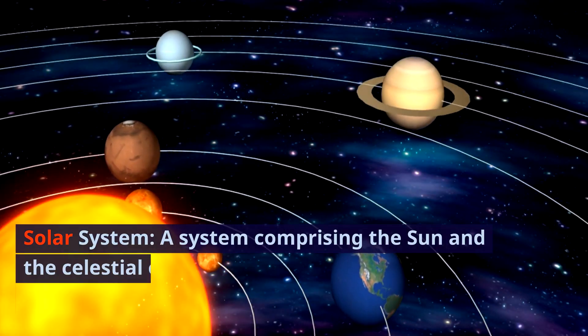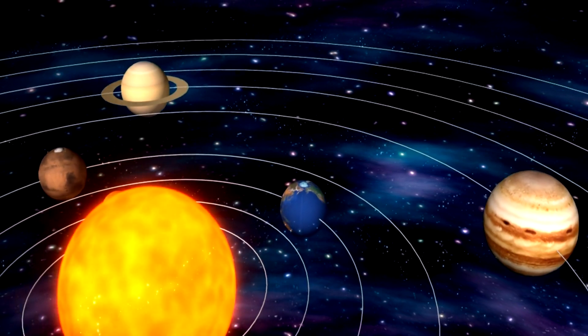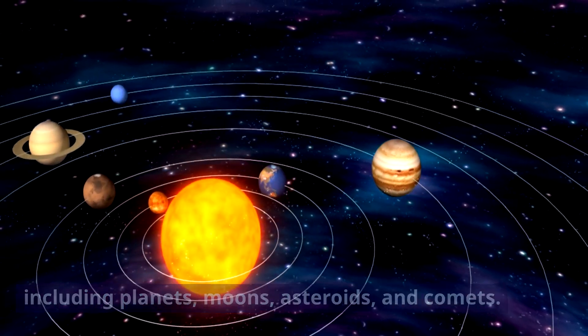Solar system. A system comprising the sun and the celestial objects that are gravitationally bound to it, including planets, moons, asteroids, and comets.